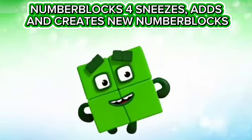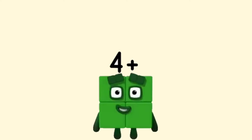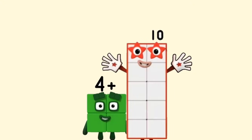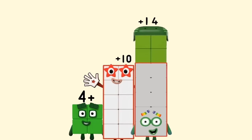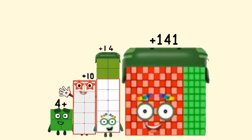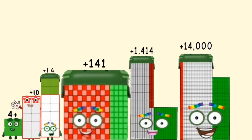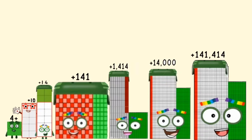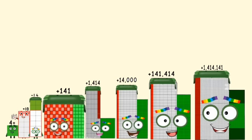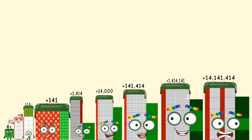Number Blocks for sneezes — A-D-D-S — and creates new Number Blocks. A-CHOO! Multiple sneezes follow: A-CHOO, A-CHOO, then a rapid series of A-CHOO repeated many times, followed by several more individual Achoo sneezes.